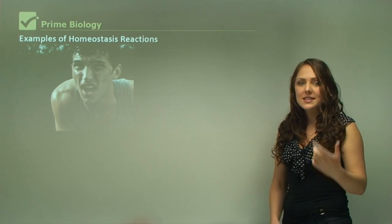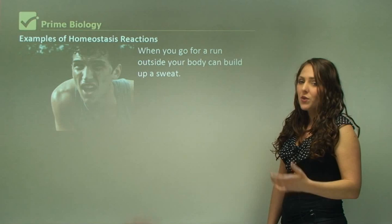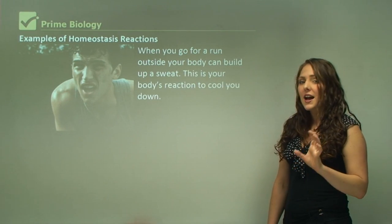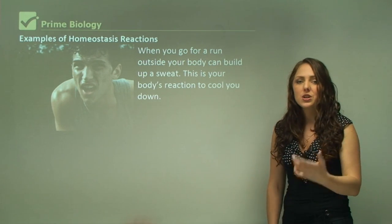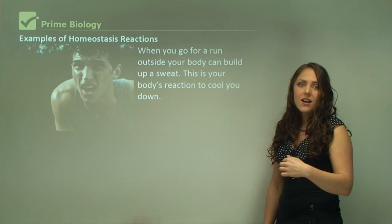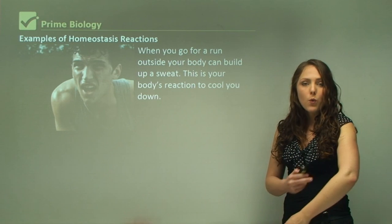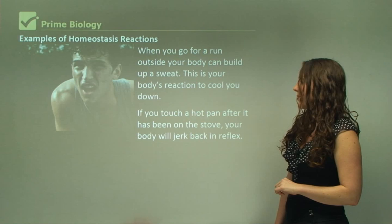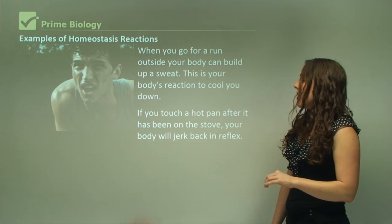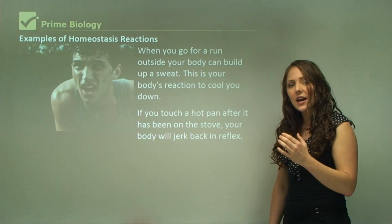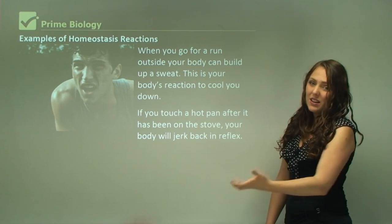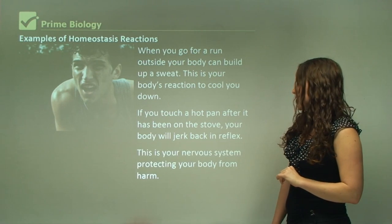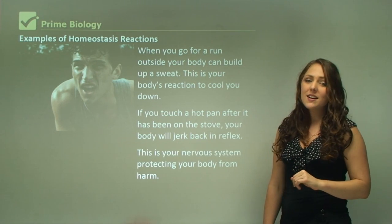Some examples of homeostasis: when you go for a run, your body builds up a sweat to cool down, because sweat evaporating has a cooling effect. If you touch a hot pan, your body will jerk — this is your nervous system's reflex reaction, still part of homeostasis. Your nervous system is protecting your body from excess harm.